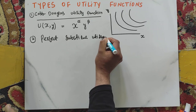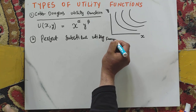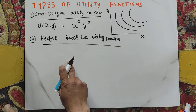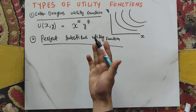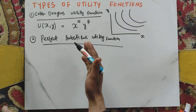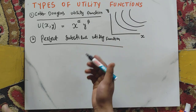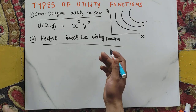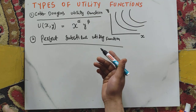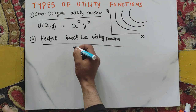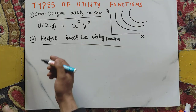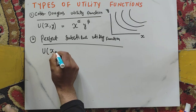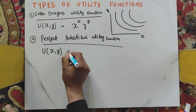The second type is the perfect substitute utility function. This function assumes that goods are perfectly interchangeable, meaning a consumer is indifferent between consuming one good or another — they are perfect substitutes of each other. A classic example is tea and coffee.